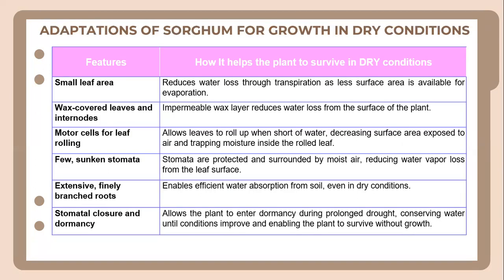Let's look at the features that allow sorghum to adapt for growth in dry conditions. First, sorghum has a small leaf area, which reduces water loss through transpiration because less surface area is available for evaporation. Additionally, it has wax-covered leaves and internodes, which form an impermeable layer that reduces water loss from the surface of the plant. It also has motor cells for leaf rolling, which allow leaves to roll up when short of water, decreasing the surface area exposed to air and trapping moisture inside the rolled leaf.